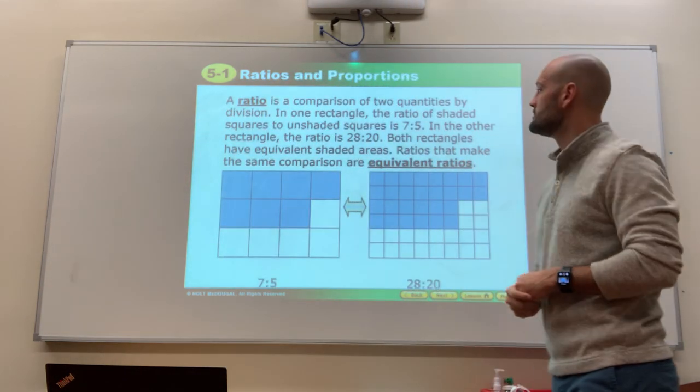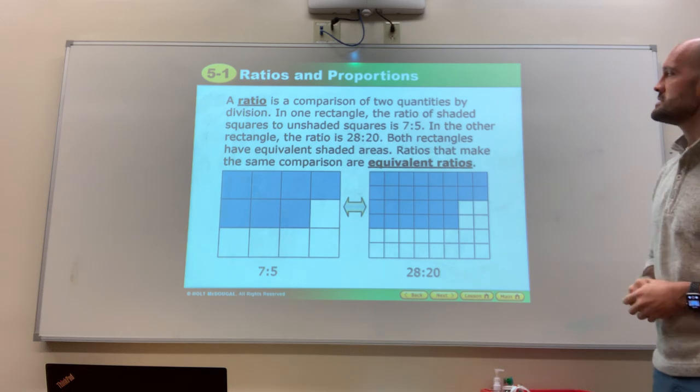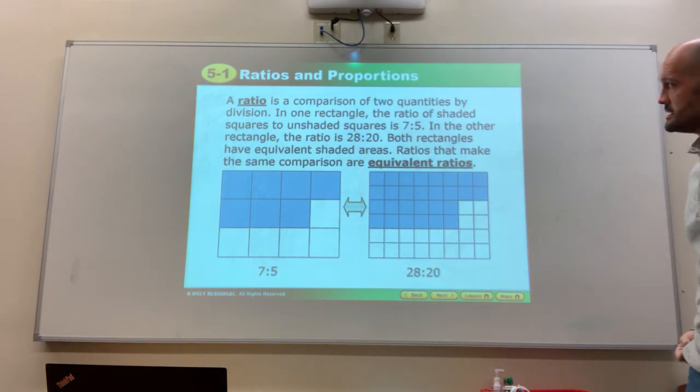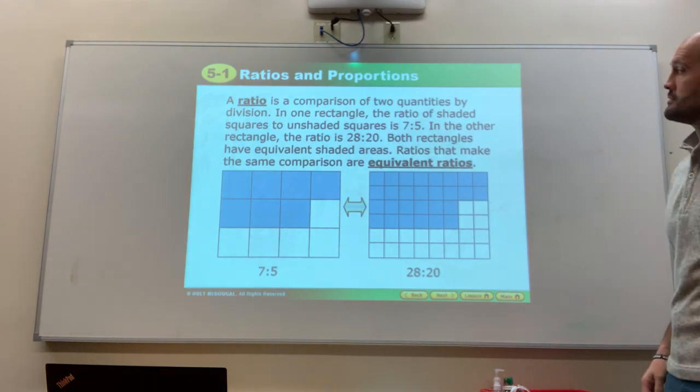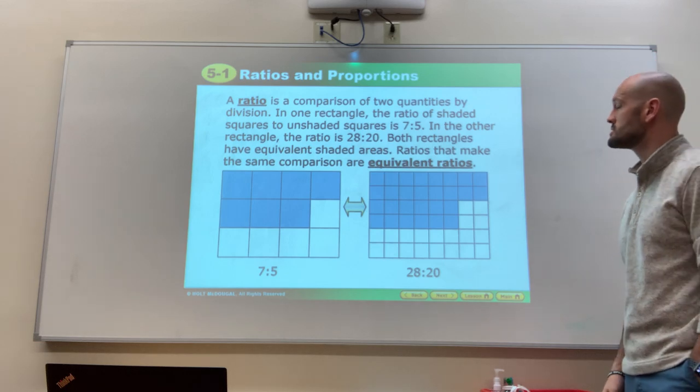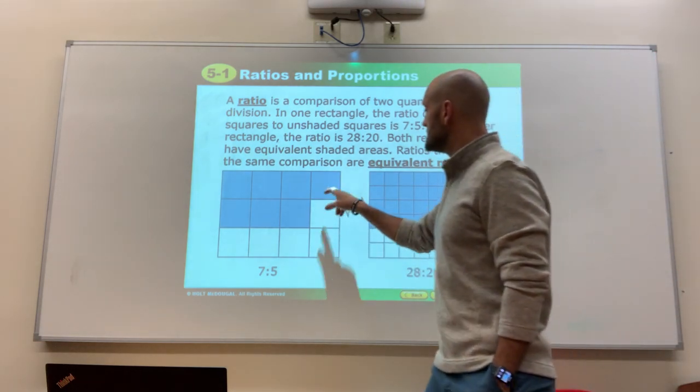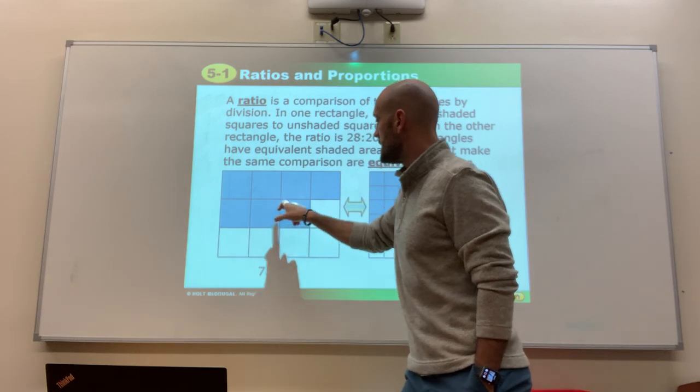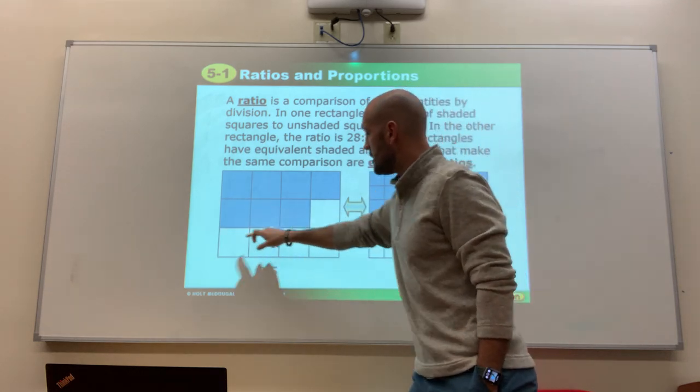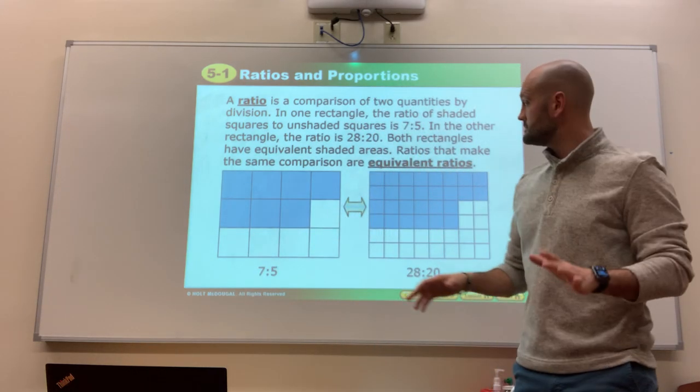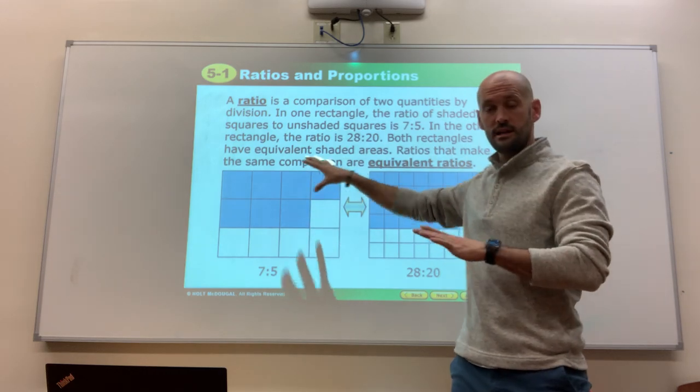Ratios and proportions. A ratio is a comparison of two quantities by division. In one rectangle, the ratio of the shaded squares to unshaded squares is 7 to 5. So again, 7 are shaded, 5 are not. So there are 7 shaded, 5 not.